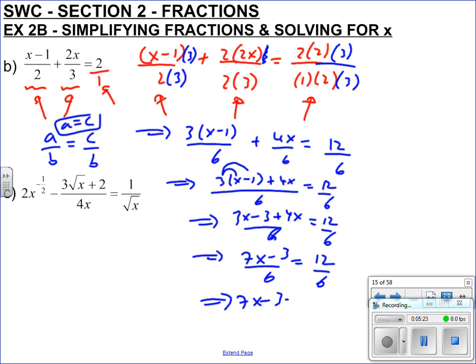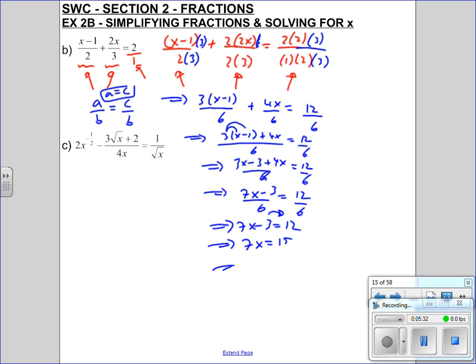So therefore 7x take 3 must be 12. Bring all the x's over to one side, which they are, all the numbers over to the other, 15. So x must be 15 over 7. And this can be checked: if you whack x equals 15 over 7 in there, it should equal 2. So that's that one.